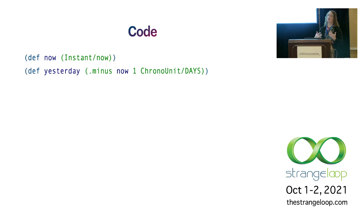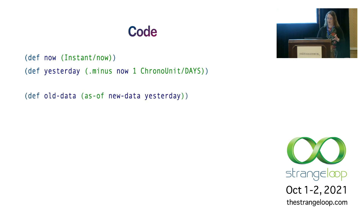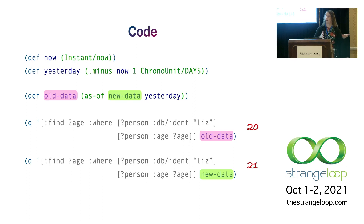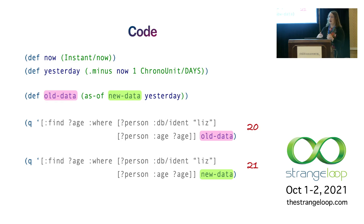We don't have to hold onto snapshots manually. Instead, we can use timestamps to find the appropriate data — calculating the time from yesterday and using that with the current database to ask what the database looked like 24 hours ago. Querying both gives two different answers. We also have transaction IDs stored in order, and we can say we want to see data since a particular time or as of a particular time. It's very fast to find the transaction you want, and all the data at that point is readily available.